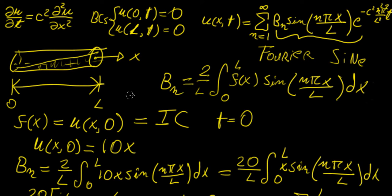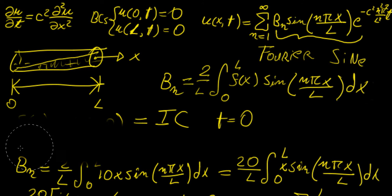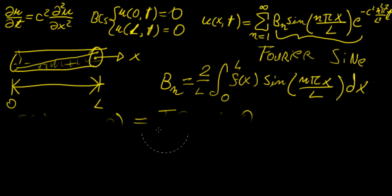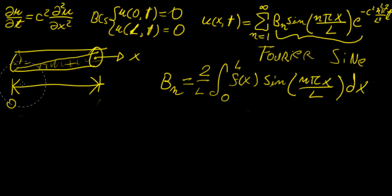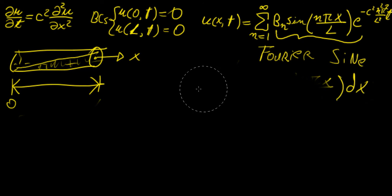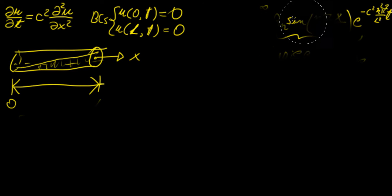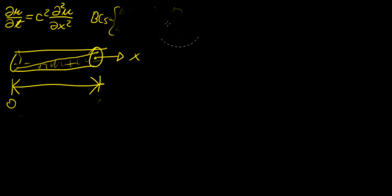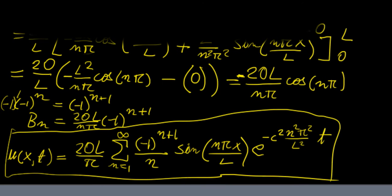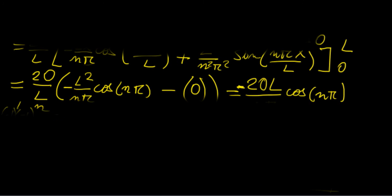Now let's say we wanted to solve a different kind of problem where the boundary conditions were different. So far we have been dealing with Dirichlet boundary conditions — those that tell us the value of the function itself at the boundaries. Now we're going to change the boundary conditions, so let me erase all of this to give us some space to work with.